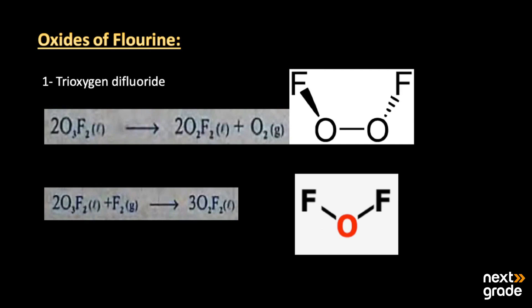The first oxide of fluorine we consider is trioxygen difluoride — 'trioxygen' meaning three oxygen atoms and 'difluorine' meaning two fluorine atoms — so its formula is O3F2. In the liquid state, it is prepared from a mixture of fluorine and oxygen passed through an electric discharge at a temperature of around 360 degrees Celsius, resulting in a dark viscous liquid that turns to a reddish-brown solid.